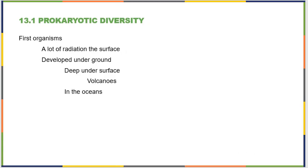The first organisms to develop on earth had to deal with a lot of radiation on earth's surface. We didn't have much of an atmosphere, which nowadays helps to filter out dangerous radiation from our cosmic background and solar flares from the sun. So a lot of them developed underground, really deep under the surface, near volcanoes, and deep underwater in the oceans.